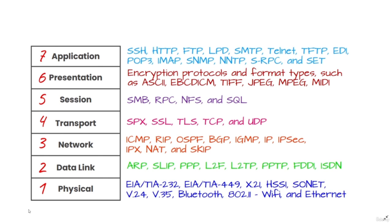The second layer of the OSI model is the data link layer. At the data link layer, directly connected nodes are used to perform node-to-node data transfer where the data is packaged into frames. The data link layer also corrects errors that may have occurred at the physical layer. It encompasses two sub-layers: the first is Media Access Control, also known as MAC, which provides flow control and multiplexing for device transmissions over a network.